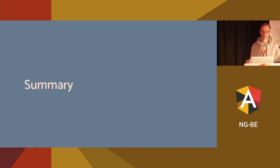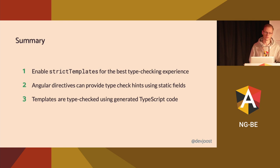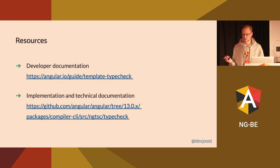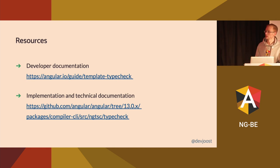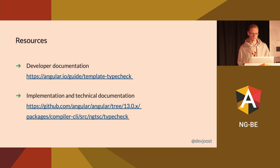That was basically all of the magic there is to it. So what we've learned is that you can configure the template type checking process using the strict templates option and its fine-grained sub-options. Then we went through the features that developers can use to improve the type checking experience for their own directives. And then lastly, we've seen how this is all made to work behind the scenes. If you want to read more about what I've just shown, we have extensive developer documentation on Angular.io. And for an even deeper dive, you can take a look at the type check package of the compiler, because it contains a readme markdown file which is very extensive in its explanation of how this all works. Thank you very much.